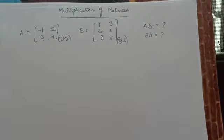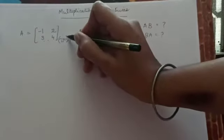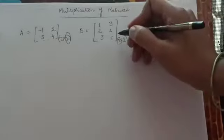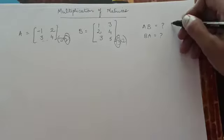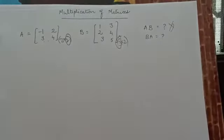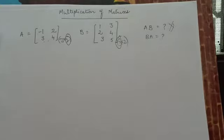Now what is the condition? The number of columns in the first matrix should be equal to the number of rows in the second matrix. So from here you can clearly see that AB is not possible, because this precondition is not satisfied. So we will have to shift B to the first place and A to the second place.